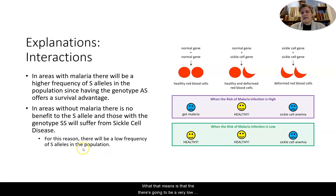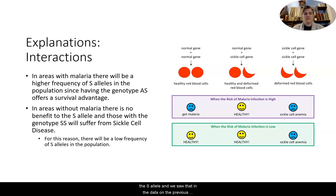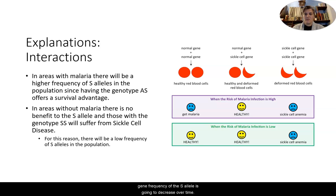This means there will be a very low frequency of S alleles in populations in areas without malaria, because there is no benefit to the S allele — as we saw in the data on the previous slides. The gene frequency of the S allele is going to decrease over time.